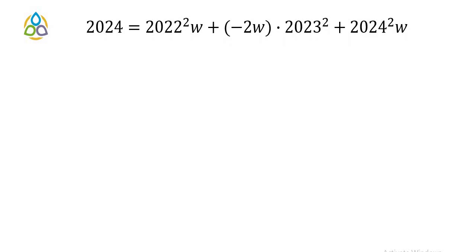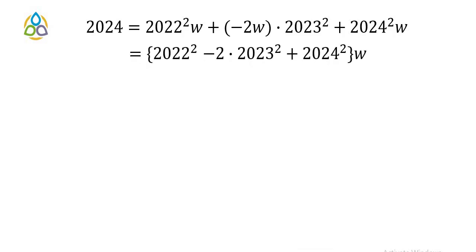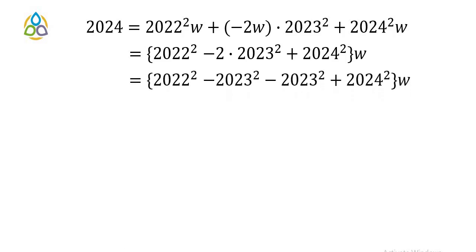Substituting u = w and v = −2w, the left-hand side becomes 2022²w + 2023²(−2w) + 2024²w. Taking w common: w(2022² − 2·2023² + 2024²). We can split 2·2023² as 2023² + 2023², rewriting the bracket as (2024² − 2023²) − (2023² − 2022²).